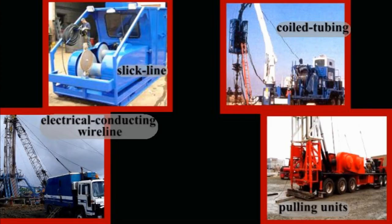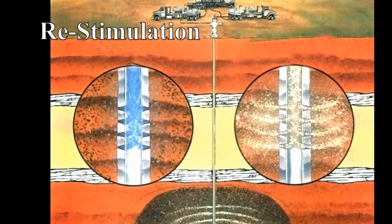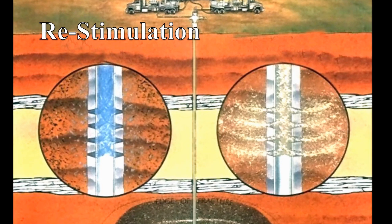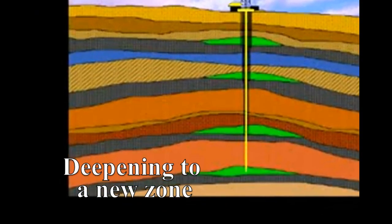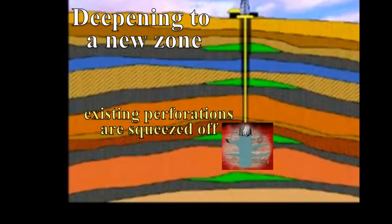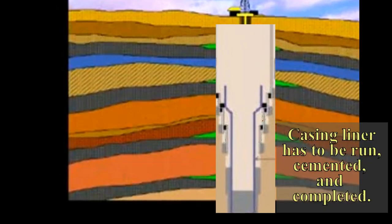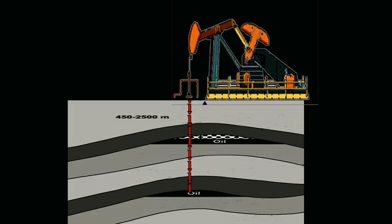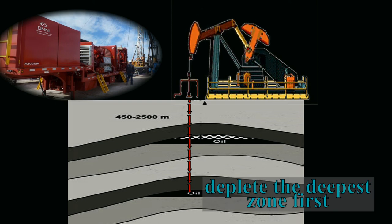Other types of workovers might include re-stimulation, where the original pay zone may need to be re-acidized or re-fractured. Deepening to a new zone: in this workover, the existing perforations are squeezed off and the hole is drilled deeper to a new zone. Because it is deeper, a casing liner has to be run, cemented, and completed. As you can see from our first example of a workover, it is preferable and much easier to deplete the deepest zone first.